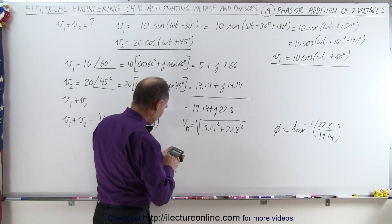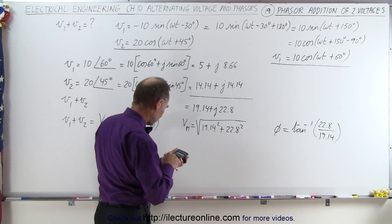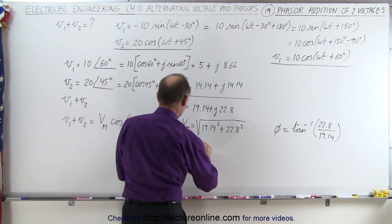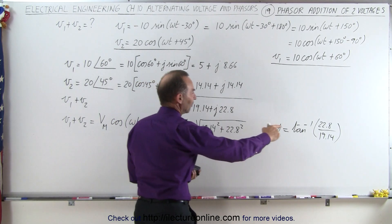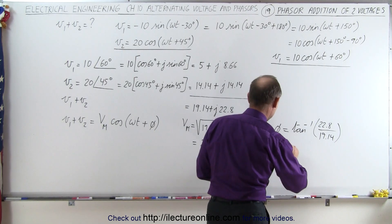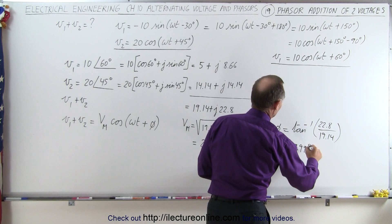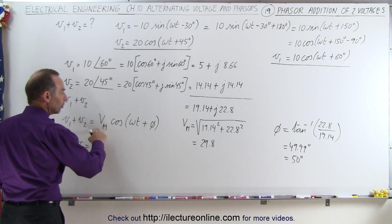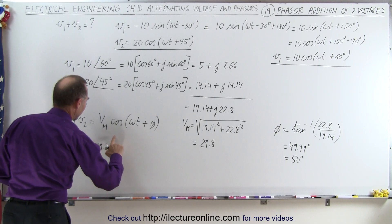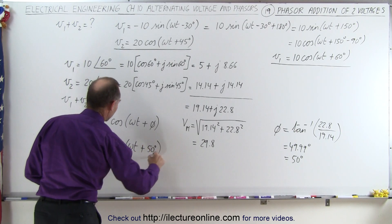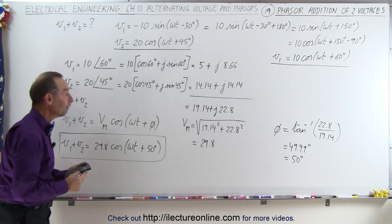So let's go ahead and compute this. 19.14 squared plus 22.8 squared, take the square root — that gives us 29.8. And for the phase angle, 22.8 divided by 19.14, take the inverse tangent — that gives us 49.99 degrees, which is basically 50 degrees. So V1 plus V2 is equal to 29.8 times the cosine of omega t plus 50 degrees. This is the resultant of adding those two voltages together.